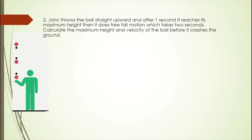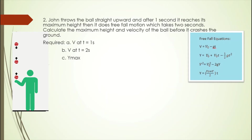Second example: John throws a ball straight upward, and after one second it reaches its maximum height. Then it does free-fall motion, which takes 2 seconds. Calculate the maximum height and velocity of the ball before it strikes the ground. For letter A, we have the velocity of the ball at time equal to 1 second. For letter B, the velocity at time equal to 2 seconds, and the maximum height.